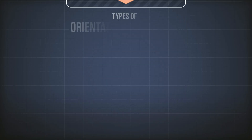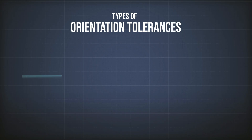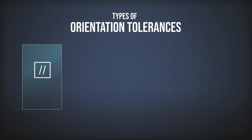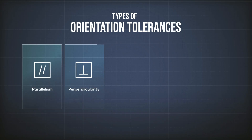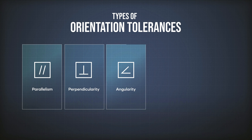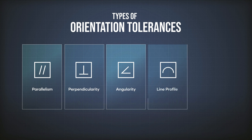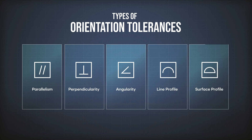Orientation tolerances include several tolerances: we have parallelism, we have perpendicularity, we have the angularity tolerance, and we can also use the line profile or the surface profile to describe or control the orientation of an element.